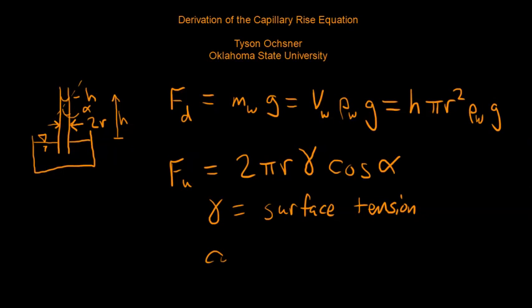Remember here gamma in this case is our surface tension, and the cosine of alpha is necessary to calculate the upward component of the force. If alpha was zero, cosine of zero is one so the upward component would be one. When alpha is greater than zero, the cosine of alpha will be something less than one.